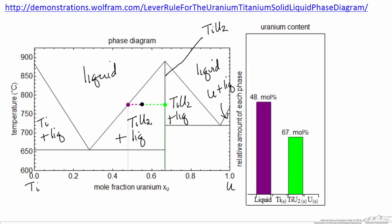When I say titanium, I mean solid titanium. In this region we have two solids: one is the stoichiometric compound, the other is uranium. Here we have two solids: titanium plus again the stoichiometric compound.